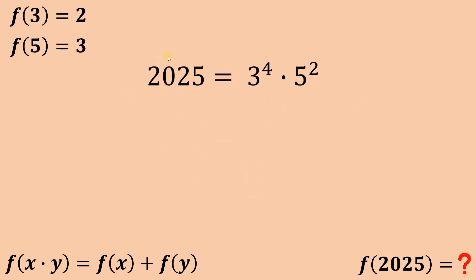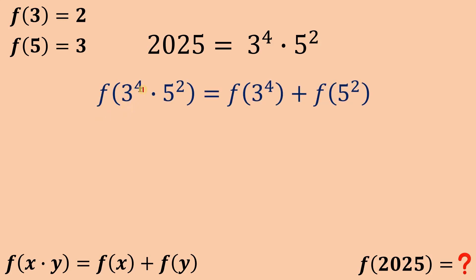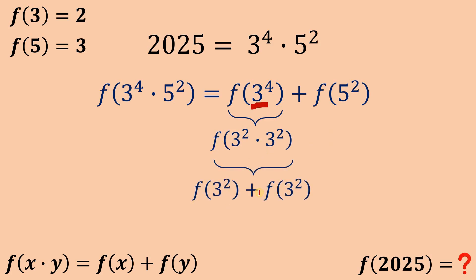Let's set up this function. We know 2025 is 3 to the fourth power times 5 squared. Therefore, we can rewrite f(3⁴ times 5²) as f(3⁴) plus f(5²). Now, 3 to the fourth power can be rewritten as 3 squared times 3 squared, so we get f(3²) plus f(3²).